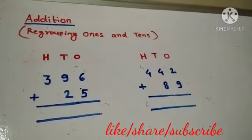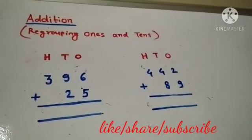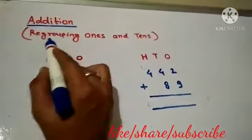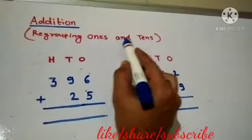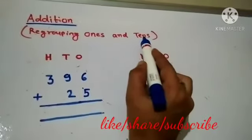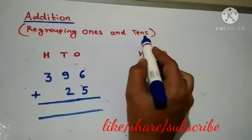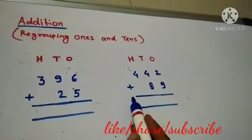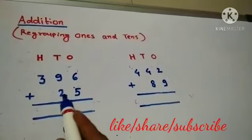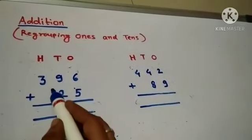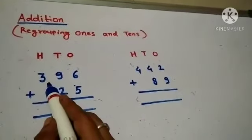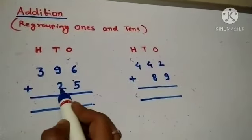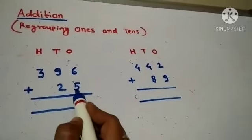Hello everyone, today we are going to learn addition — regrouping 1's and 10's. Now add. So this example of addition: the first example is 396 plus 25.